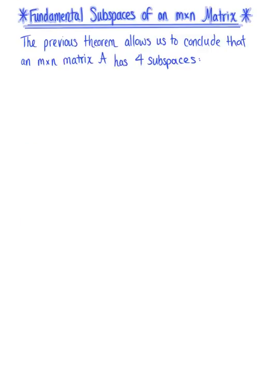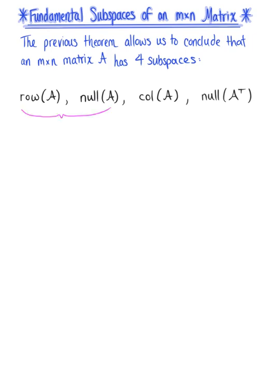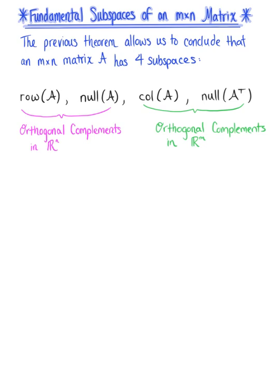This last theorem allows us to conclude that an M by N matrix A has four subspaces: the row space of A, the null space of matrix A, the column space of matrix A, and the null space of the transpose of matrix A. The first two subspaces are called the orthogonal complements in R^N, and the second two subspaces are called the orthogonal complements in R^M.